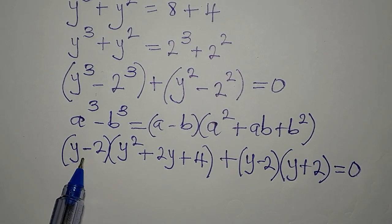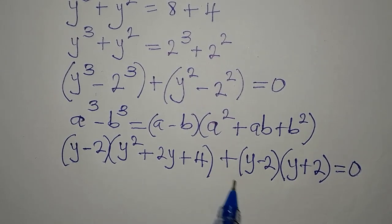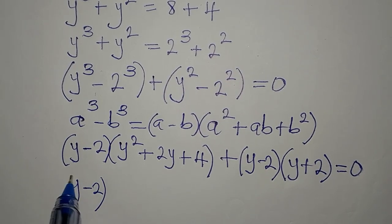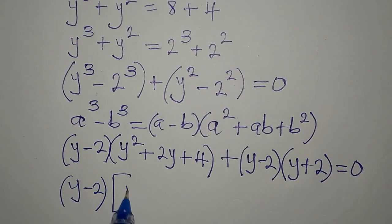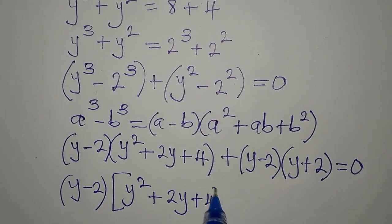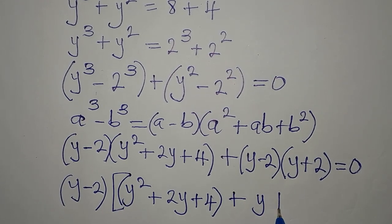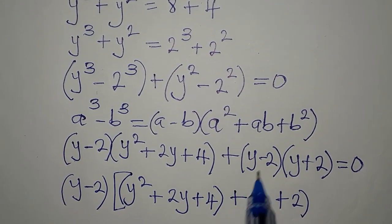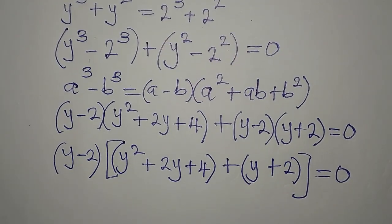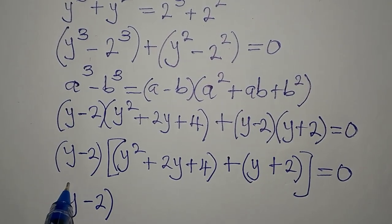Notice that (y minus 2) appears in both terms — they share a common factor of (y minus 2). Factoring it out, we open brackets and write: (y minus 2) times (y² + 2y + 4 + y + 2) equals zero.